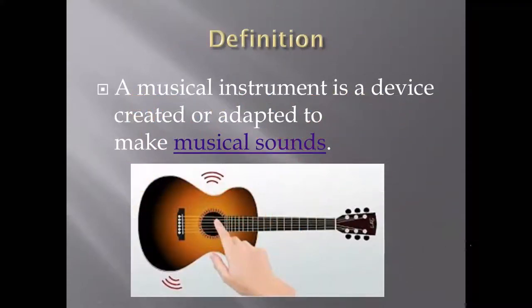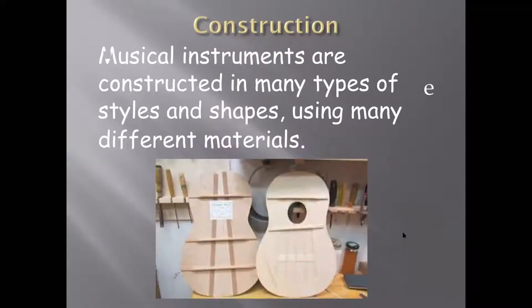Definition. A musical instrument is a device created or adapted to make musical sounds. Construction. Musical instruments are constructed in many types of styles and shapes using many different materials.